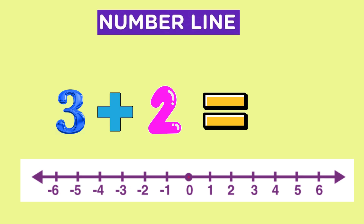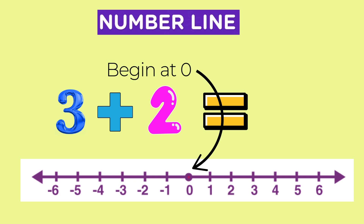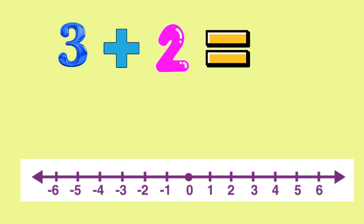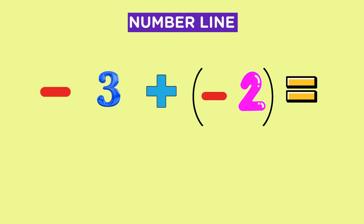Let's start with 3 plus 2 again, this time on a number line. When adding on the number line, we begin at 0. From 0, we move 3 steps to the right for the positive 3 — 1, 2, 3 — landing on positive 3. From 3, we then go 2 more steps to the right for the positive 2 — 1, 2 — and land on positive 5. So 3 plus 2 equals 5.